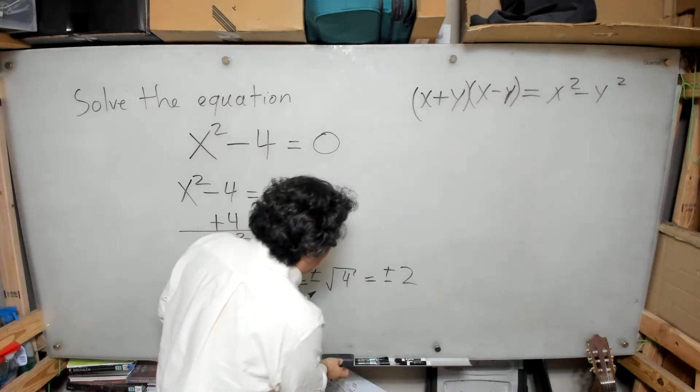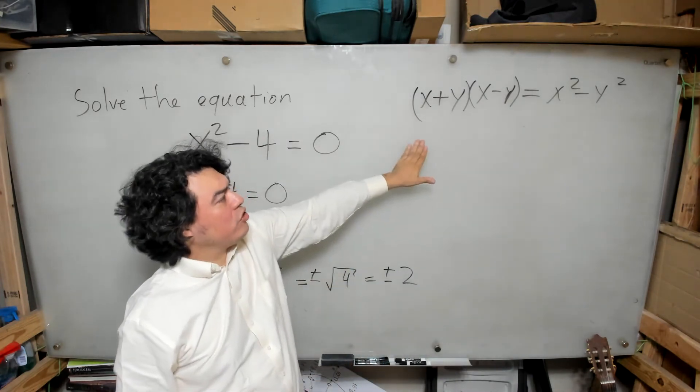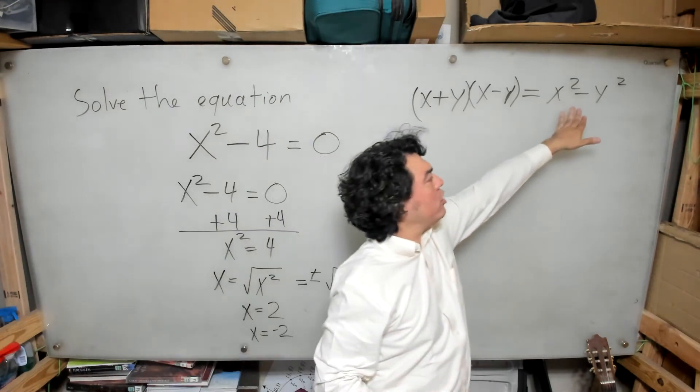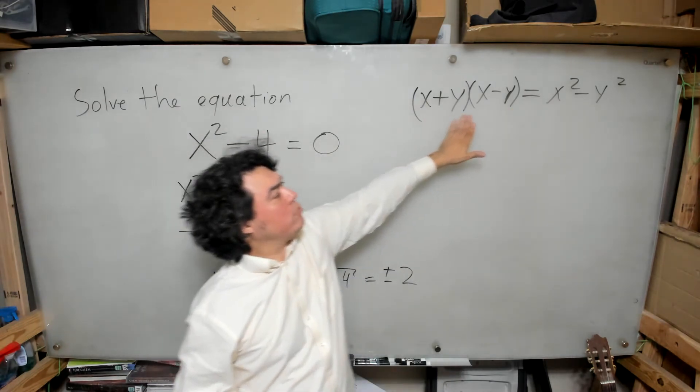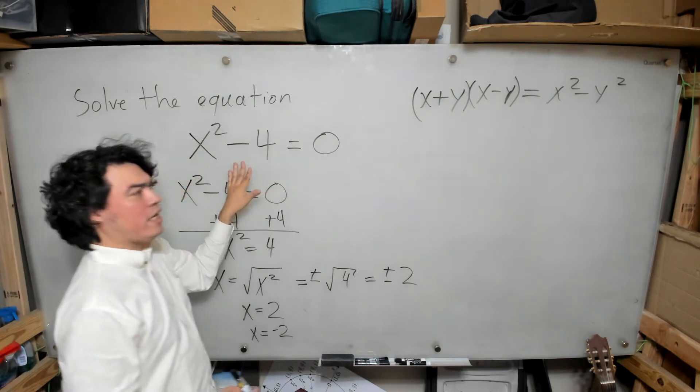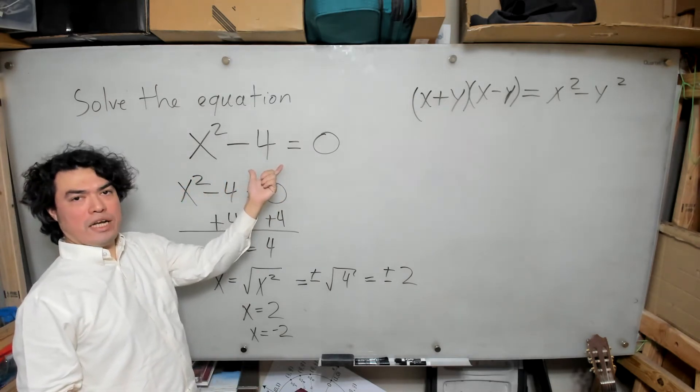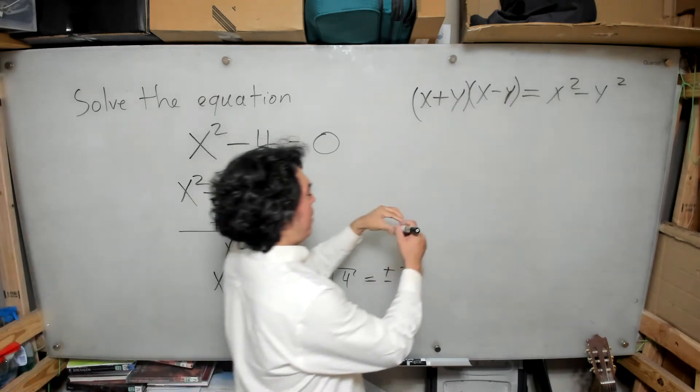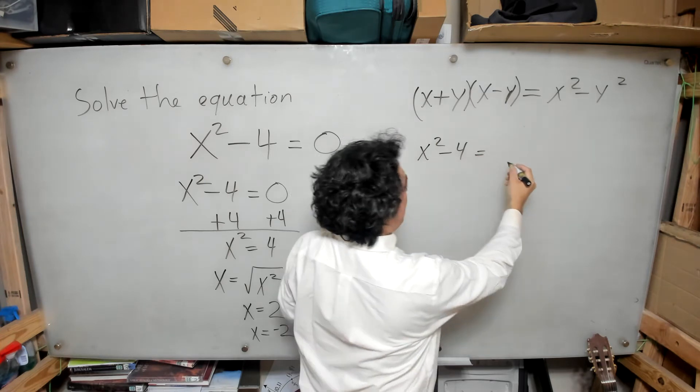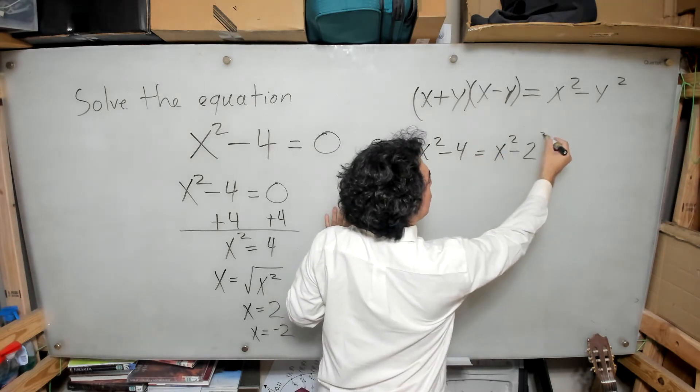If I were you, I would memorize this formula by heart. x plus y times x minus y equals x squared minus y squared or vice versa, x squared minus y squared equals x plus y times x minus y. How does that apply here? Well, this applies because I can see 4 as 2 squared. So if I have x squared minus 4, this is the same as x squared minus 2 squared.